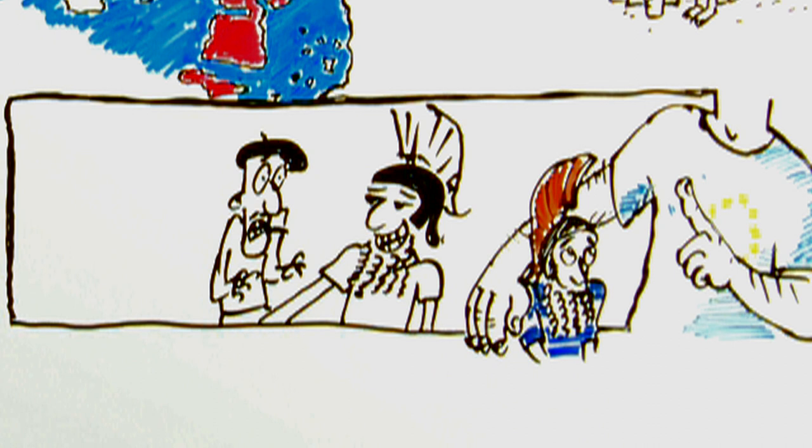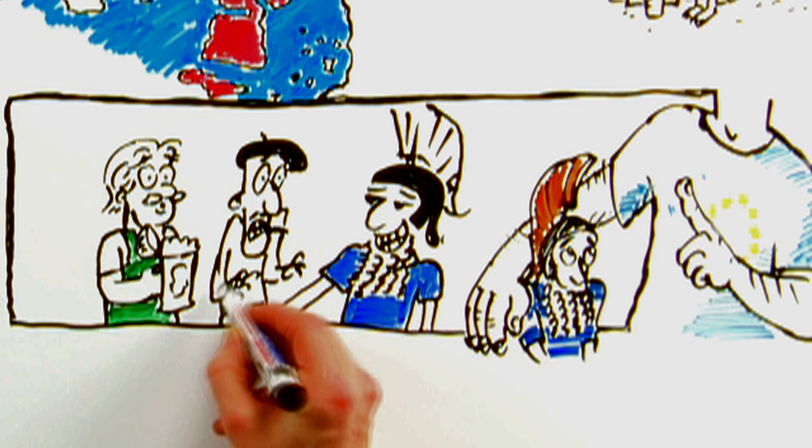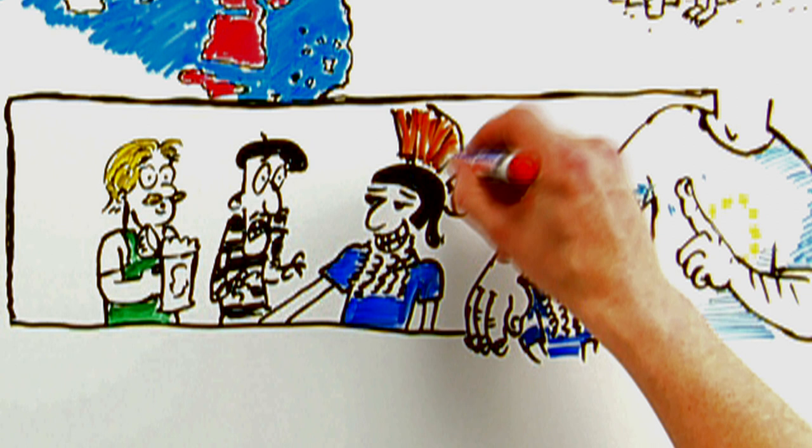So the Greeks had the Germans and the French by the balls, because the banks were up to their necks in dodgy Greek loans. So in order to force the Greeks' hand, the Germans and the French had to find a way of insulating their own banks against this Greek default.